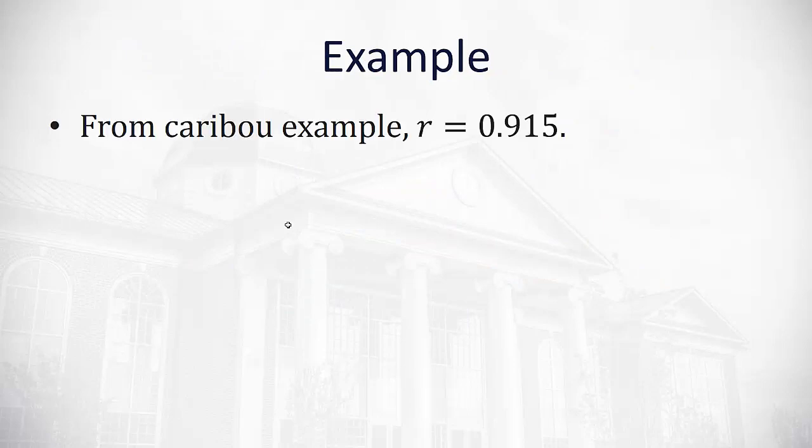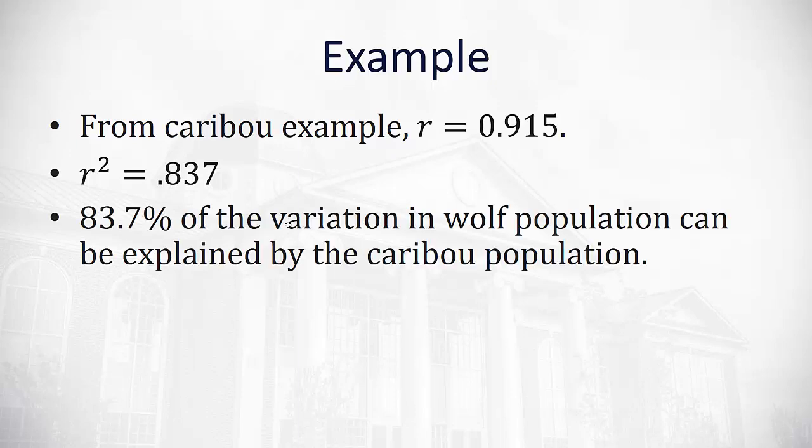So in this example we're discussing for the caribou we found that r was 0.915. If we square r, r squared is 0.837. This tells us the proportion or percentage of the variation in y that is explained by the x. Or in context 83.7 percent of the variation in the wolf population is explained by the caribou population.